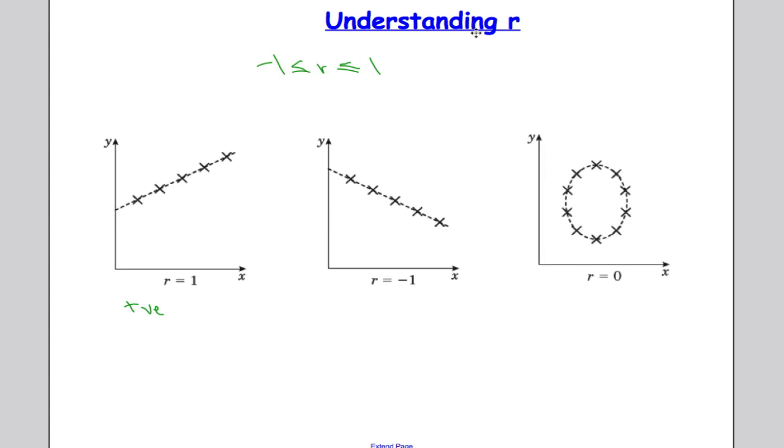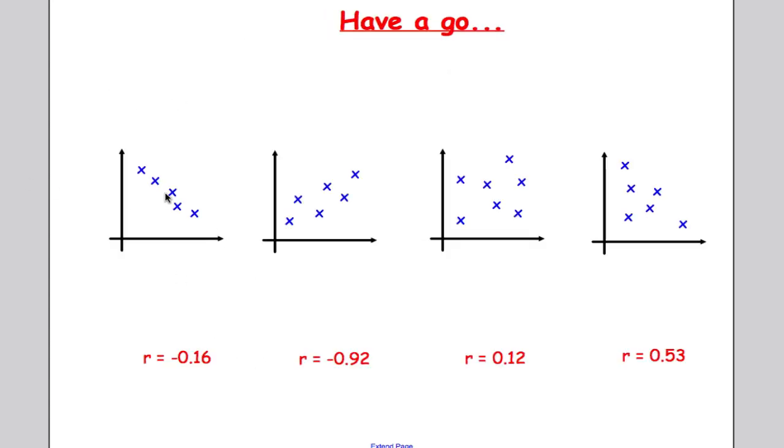If it's minus one, you've got perfect negative correlation, and if it's closer to zero that means no correlation. So a very quick question for you to try: pause the video and try and match the diagram to the value of r it represents.